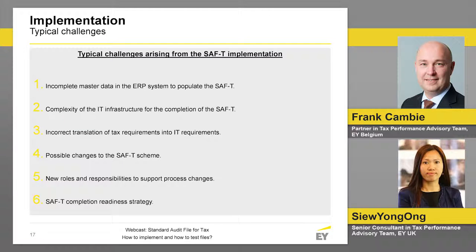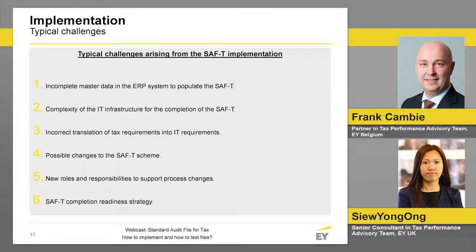Other companies are looking at a SAF-T readiness strategy. This means the process of how to get the data out of the system, how to create a SAF-T file out of your ERP platform — the responsibility is well documented and tested — but the actual file will only be created at the moment of the authorities' request. Organizations spend a bit less time on the technology but are well prepared with the documented process. The advantage is that if file formats continuously change and you've never needed to provide a filing, you haven't invested in solutions that were never used.